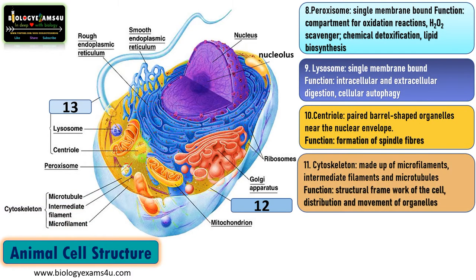The next structure is the cytoskeleton. Just like the skeletal framework we have, the cell has a skeletal framework called the cytoskeleton. It is made up of three types of filaments: microfilaments, intermediate filaments, and microtubules. Its function is to provide the skeletal framework for the cell and also to assist in the distribution and movement of organelles within the cell. The positioning of different organelles is also controlled by the cytoskeleton.